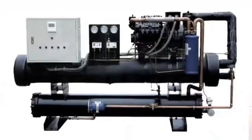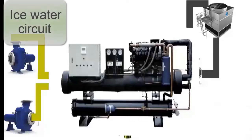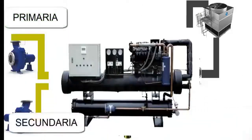On the screen we have a diagram that represents the operation, in broad strokes, of an ice water plant. As we explained in the previous class — we are showing the link that can send you to that class — in class number 1 we gave a general explanation about the operation of an ice water plant. On the left we have the chilled water circuit that goes to the application, with the primary pump and secondary pump.